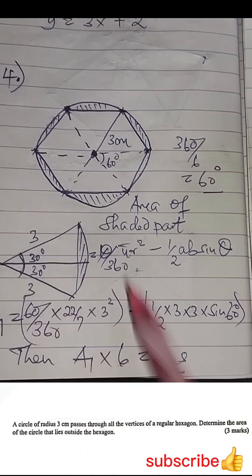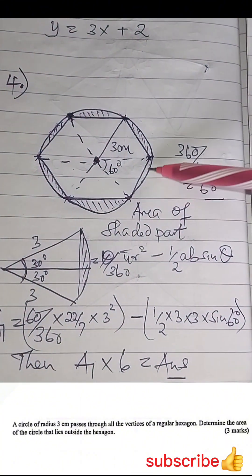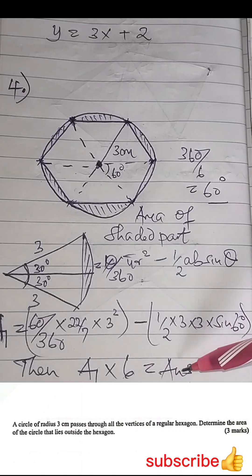you multiply by six, because we have six parts which are outside the hexagon. We get your answer.